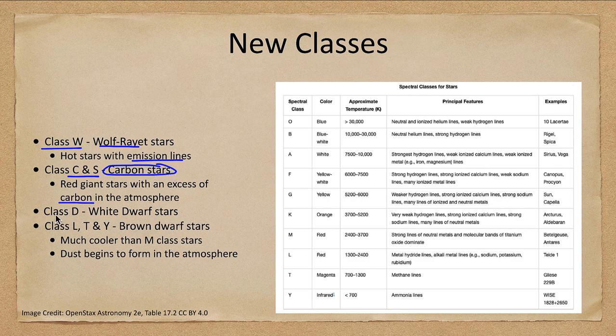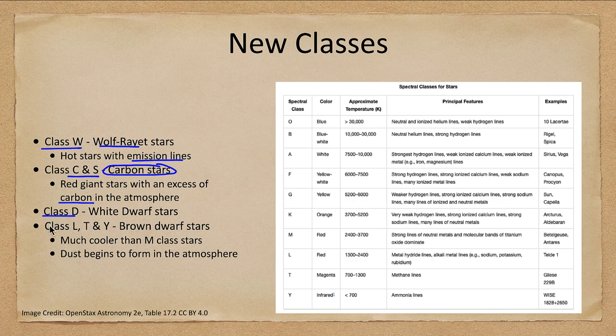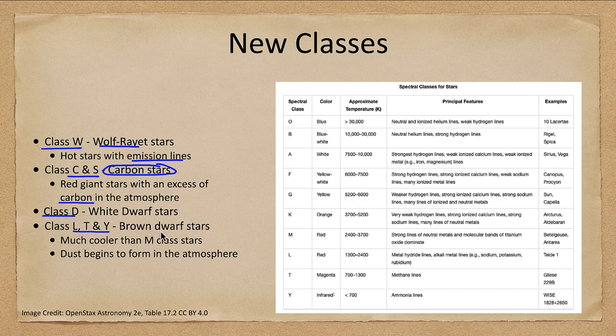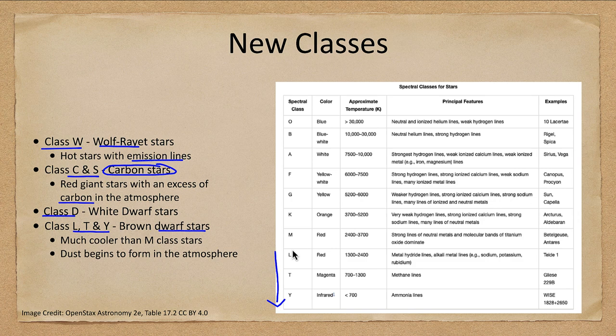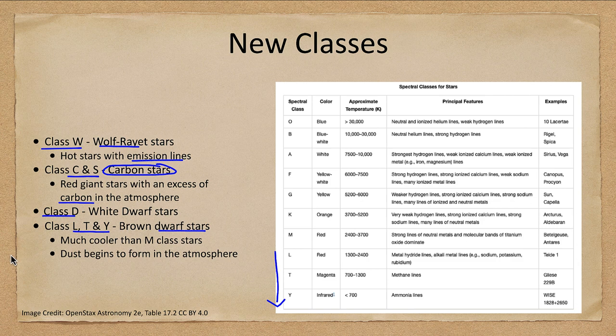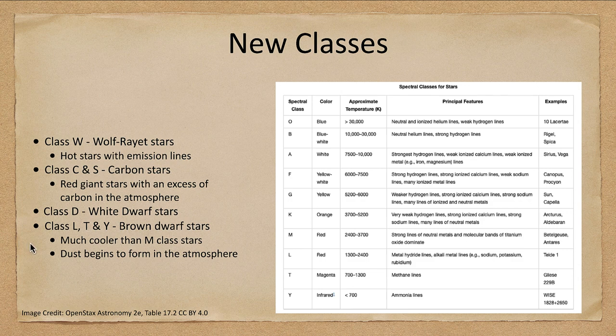We have the class D of the white dwarf stars, and then we have the classes L, T, and Y, which are the brown dwarf stars. Much cooler than the M stars and dust begins to form in their atmosphere. These are objects that are not hot enough to be able to fuse hydrogen into helium. They're kind of in between between a star and a planet.